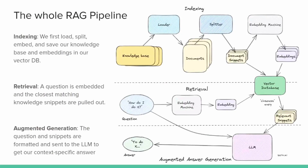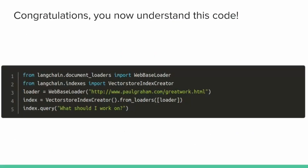This is now the whole pipeline with all the details filled in. On the indexing side, we take our knowledge base, load it, split it up, take those little snippets and turn them into AI vector embeddings, and save those in a vector database. During retrieval, we take the incoming question, do that same embedding translation, do a closeness query to find the most relevant snippets, then pass those snippets to the language model in the augmented generation step along with the original question, and the language model outputs — hopefully — a nice context-specific answer. Congratulations, you now understand this code, at least at a high level.